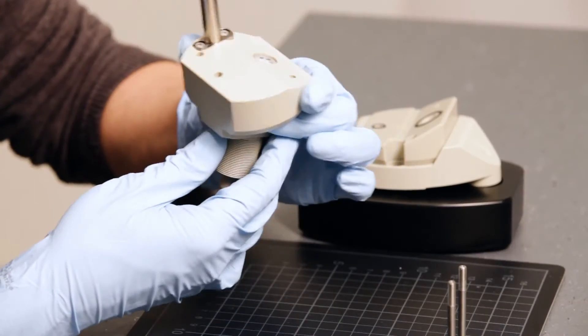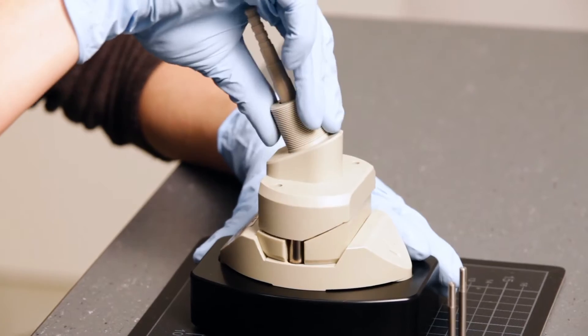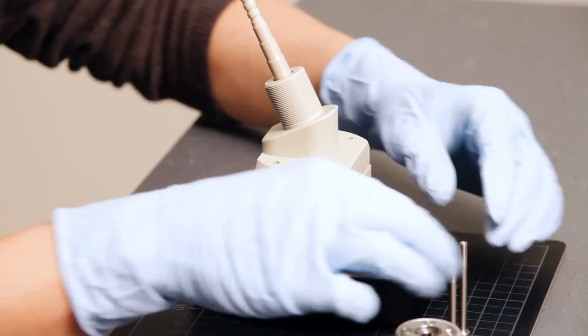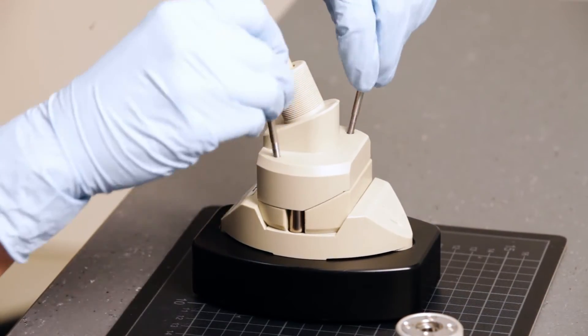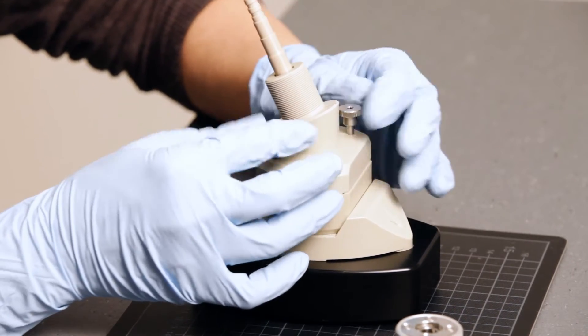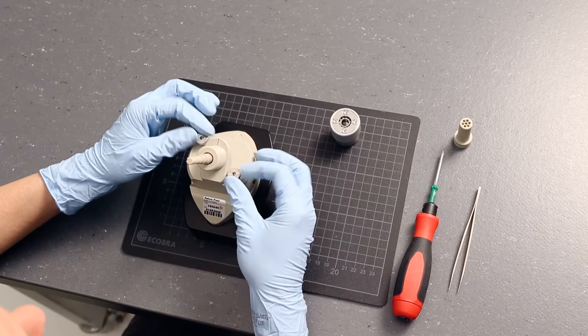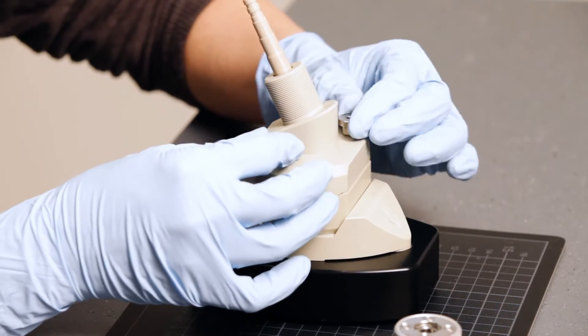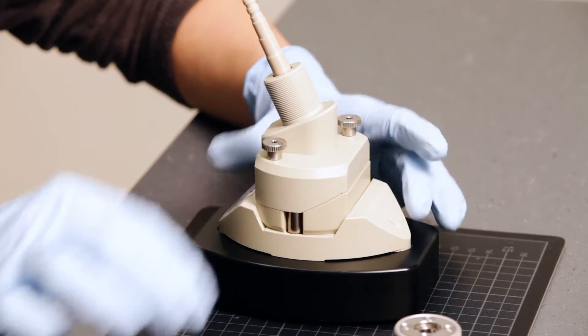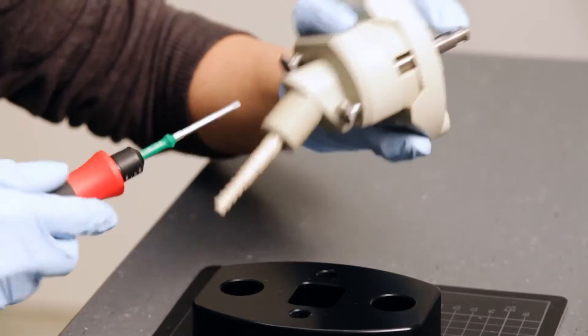Place the upper part of the cylindrical cell on the lower part of the cell and fix the two parts with the screws. Use the screwdriver to tighten them completely.